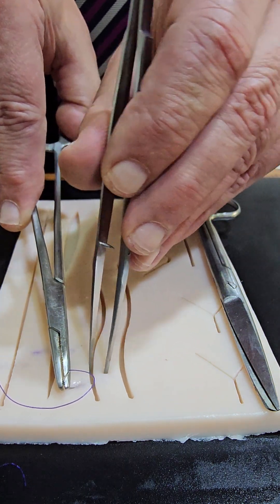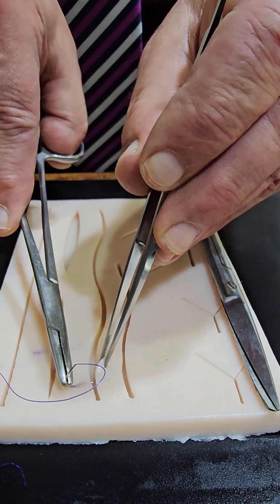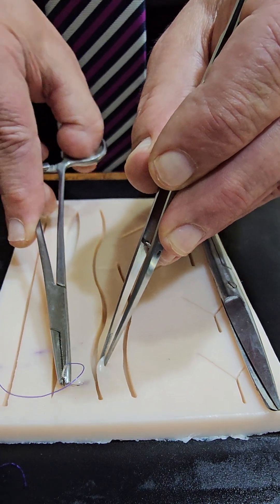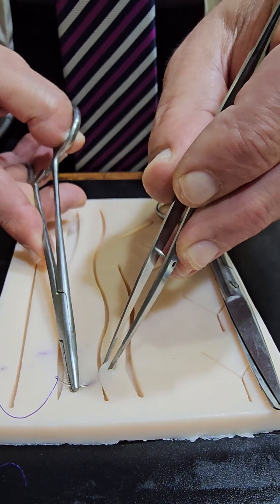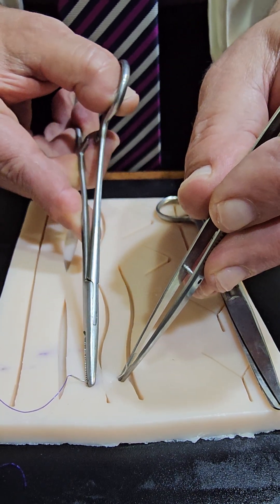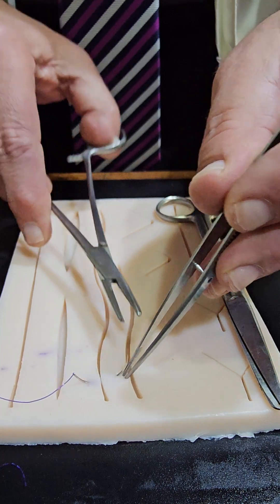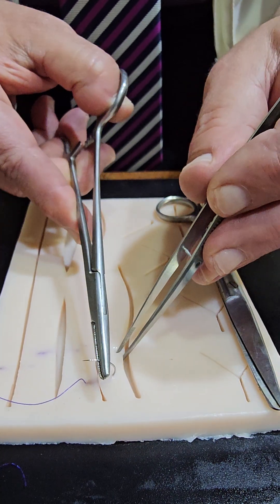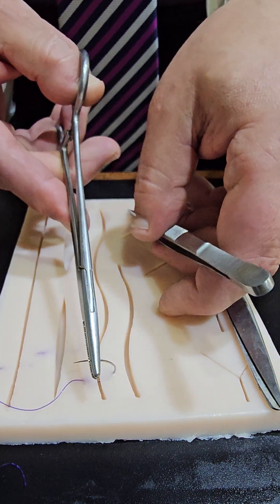Then go through the dermis to the other side and take another bite also five millimeter from the edge like this. Then withdraw the needle in the curvature of the needle like this.